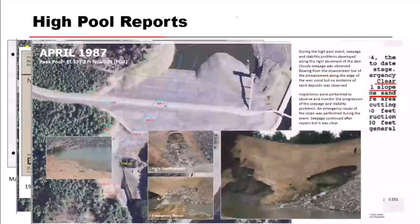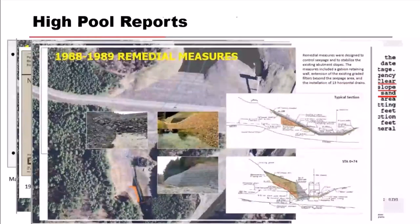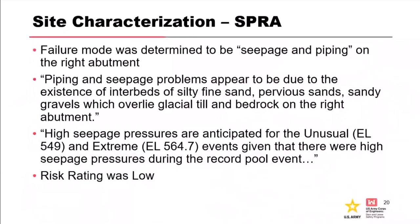You can see a history of repeated distress along the esker. Here's the cloudy discharge in that little pool — more piping from larger seeps deposited in a small delta, about 15 cubic feet. Slightly cloudy seepage was also observed along the bankline at the seepage pool. The failure mode was determined to be seepage and piping on the right abutment. Piping and seepage problems appear to be due to interbedded fine silty sands and very pervious gravels, which overlay glacial till and bedrock on the right abutment, with high seepage pressures anticipated under large events.